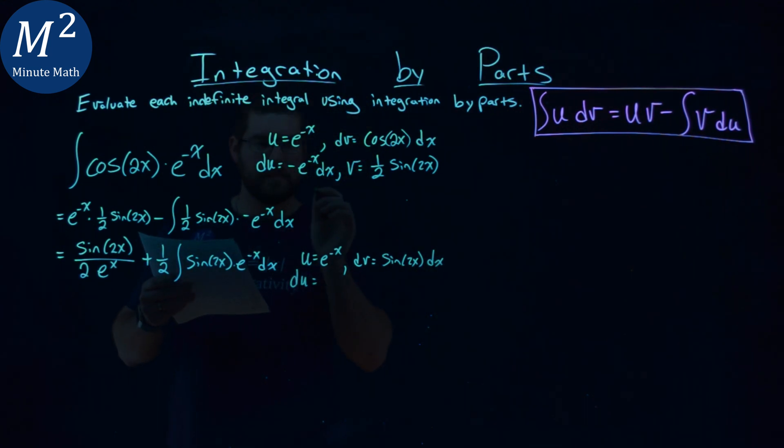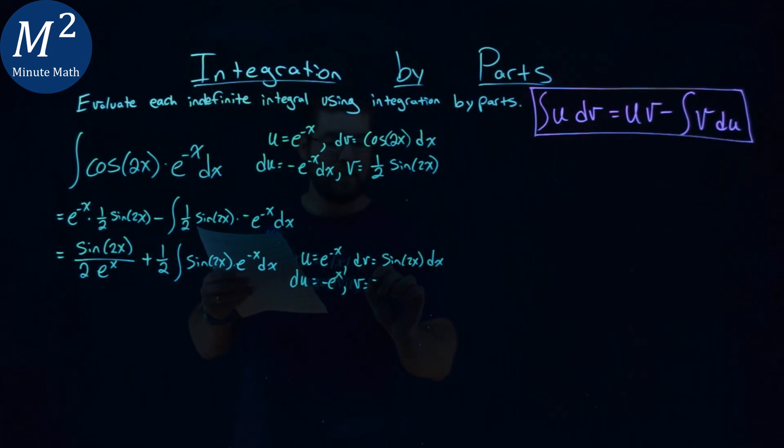So du, again, same as before, it's negative e to the negative x power. And our v value here is negative one-half cosine of 2x.